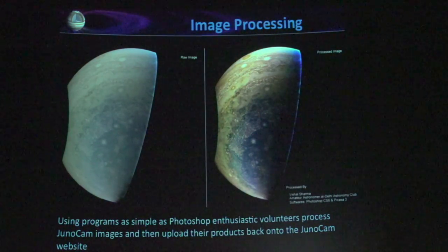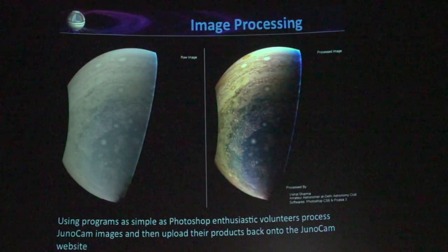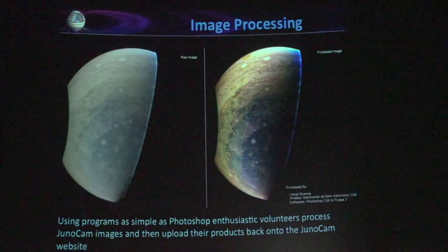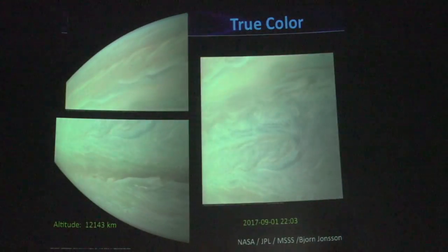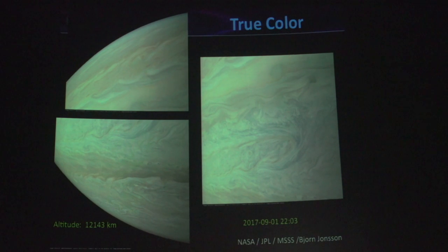Here's an example of some simple image processing, done by Vishal Sharma. On the left is our raw data, lightly processed, and on the right is what he was able to do simply using Photoshop and Picasso. Because I'm going to show you a lot of enhanced color images, I wanted to start with: this is what Jupiter really looks like. This is the color it really is if you're looking through a telescope.